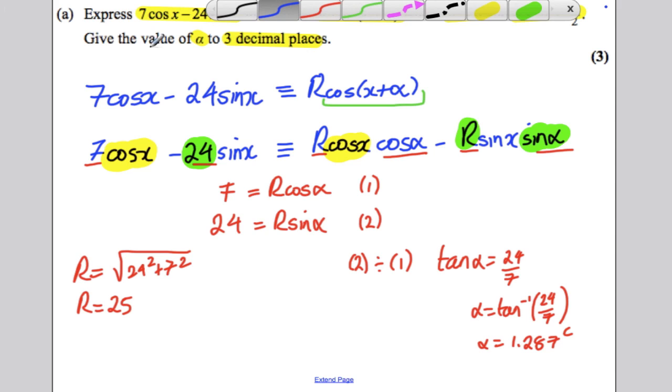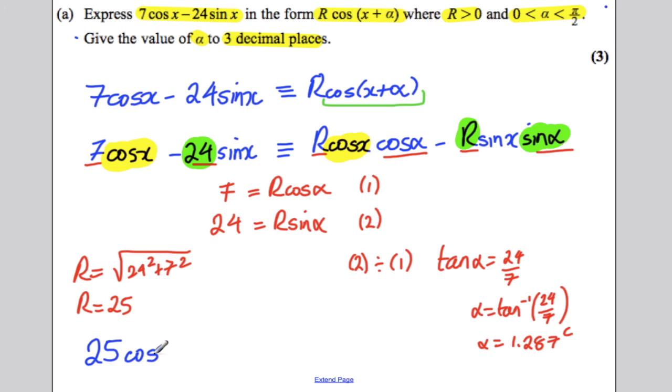So expressing this in that form, therefore, we would have 25 cos x plus 1.287. And underline your answer. There you go.